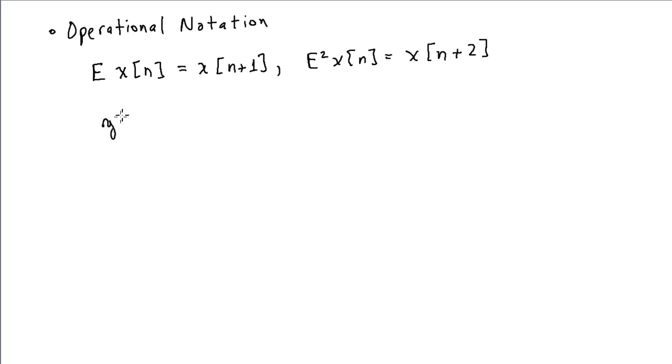For a specific example, let's consider the difference equation Y of N plus 2 plus 1 quarter Y of N plus 1 plus 1 sixteenth Y of N equals X of N plus 2. This would be a second order difference equation because that's my highest advance. Using operator notation, this becomes E squared plus 1 quarter E plus 1 sixteenth.